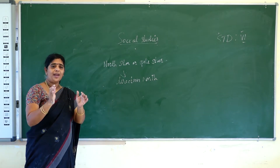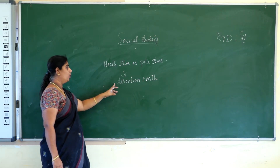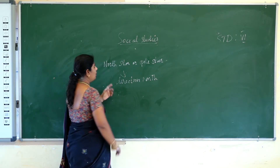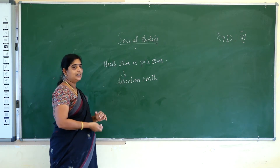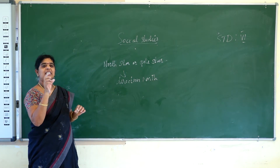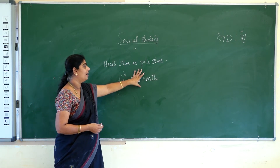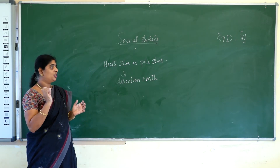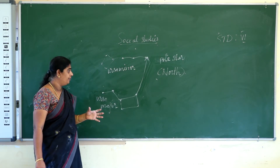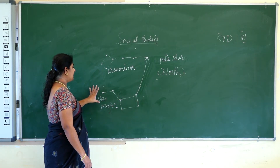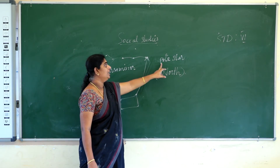It always remains fixed in its direction and never changes position. So the position of the Pole Star can always be identified. How can you identify the Pole Star? With the help of Sapta Rishi — the Seven Sages. We can identify the North Star or Pole Star with the help of the seven stars of Ursa Major, also known as Sapta Rishi.